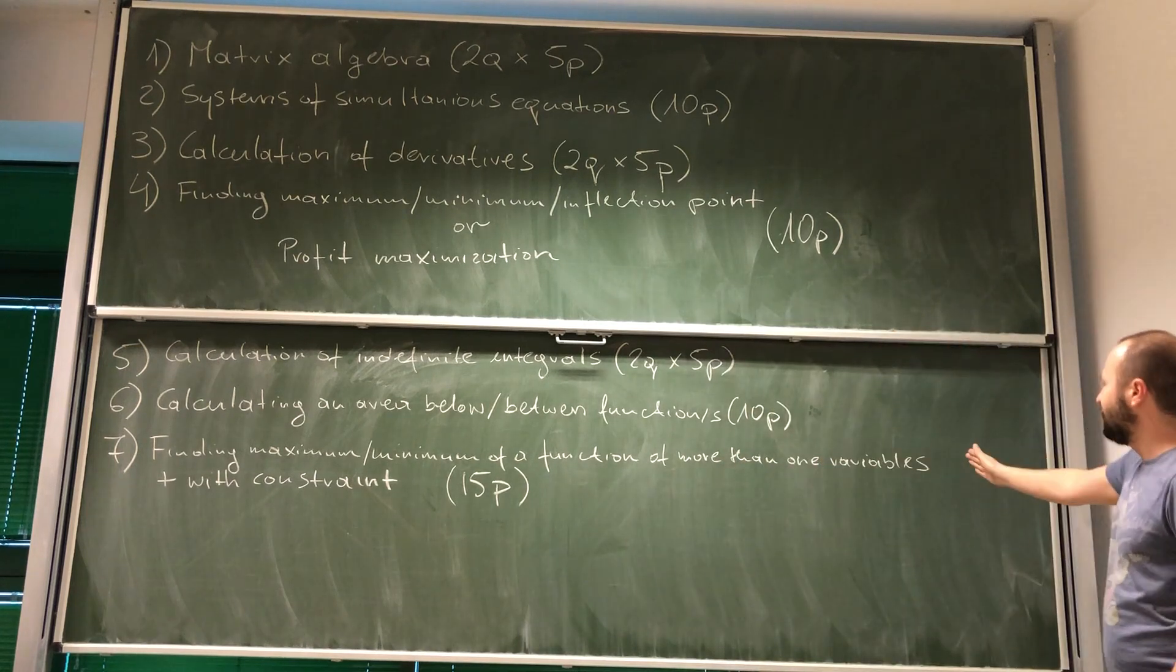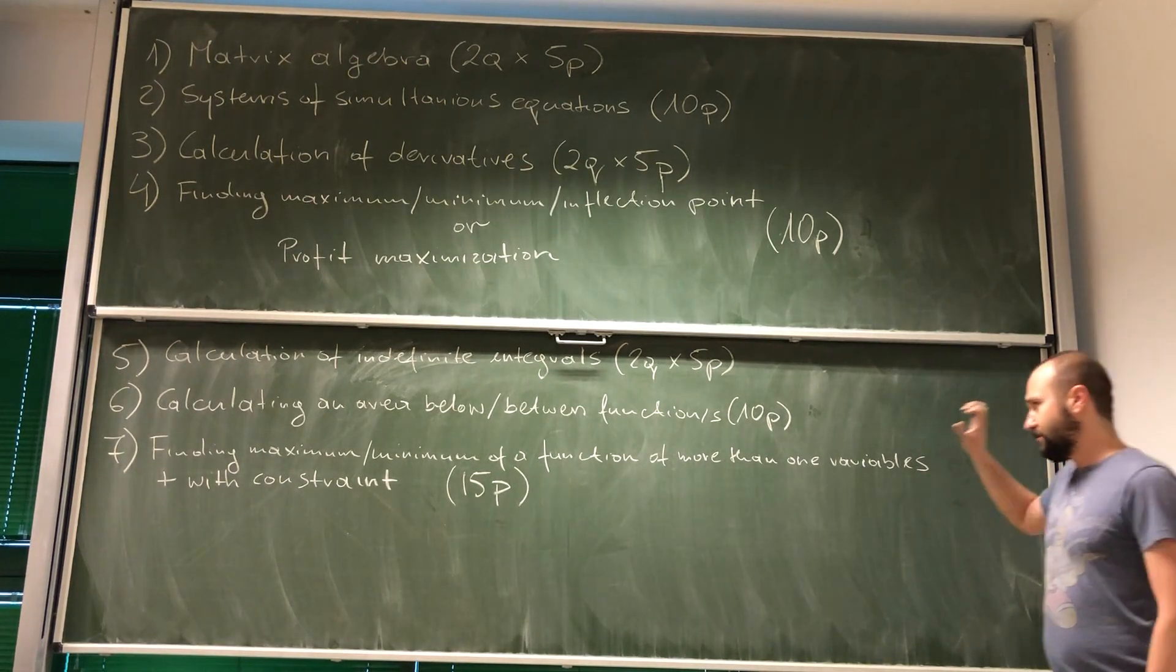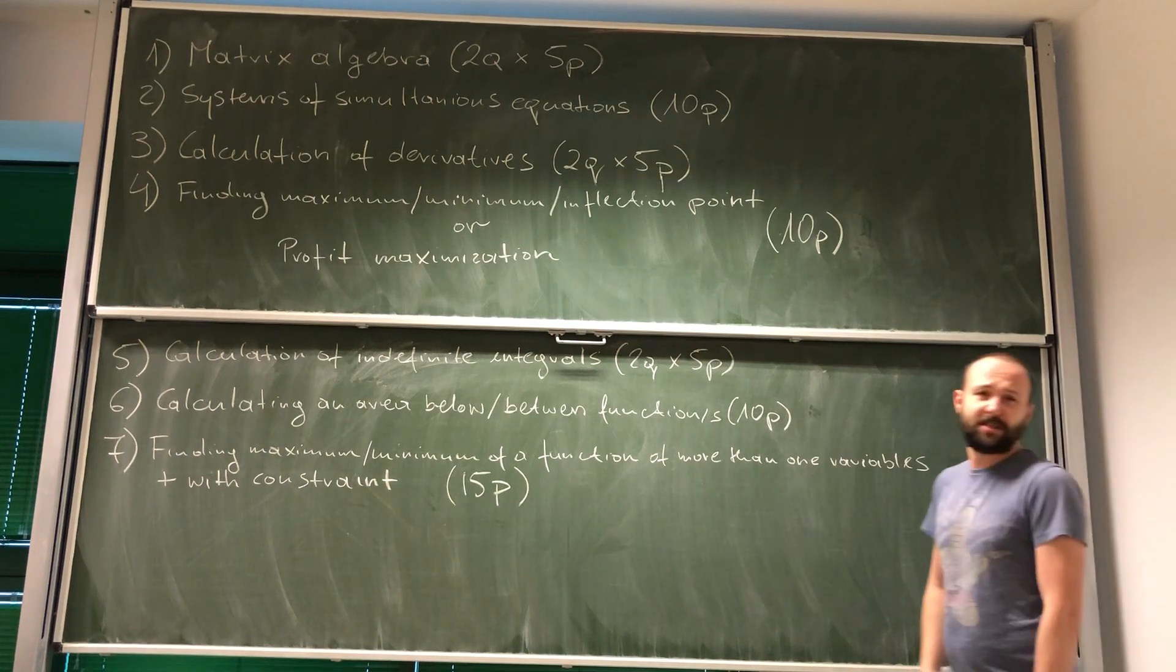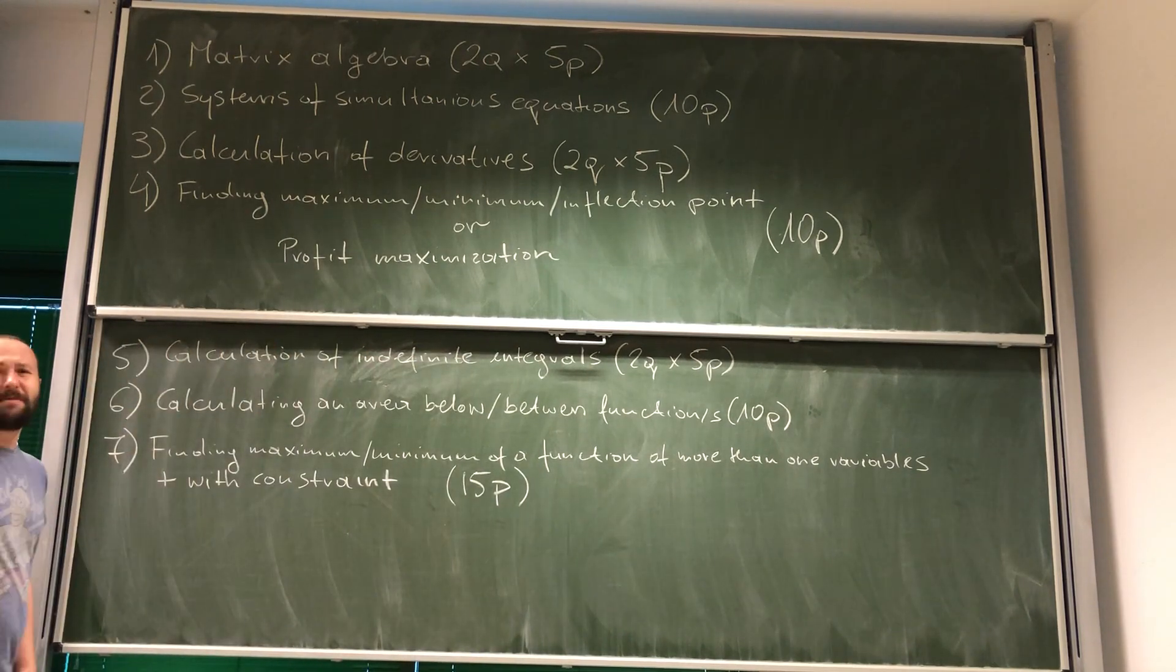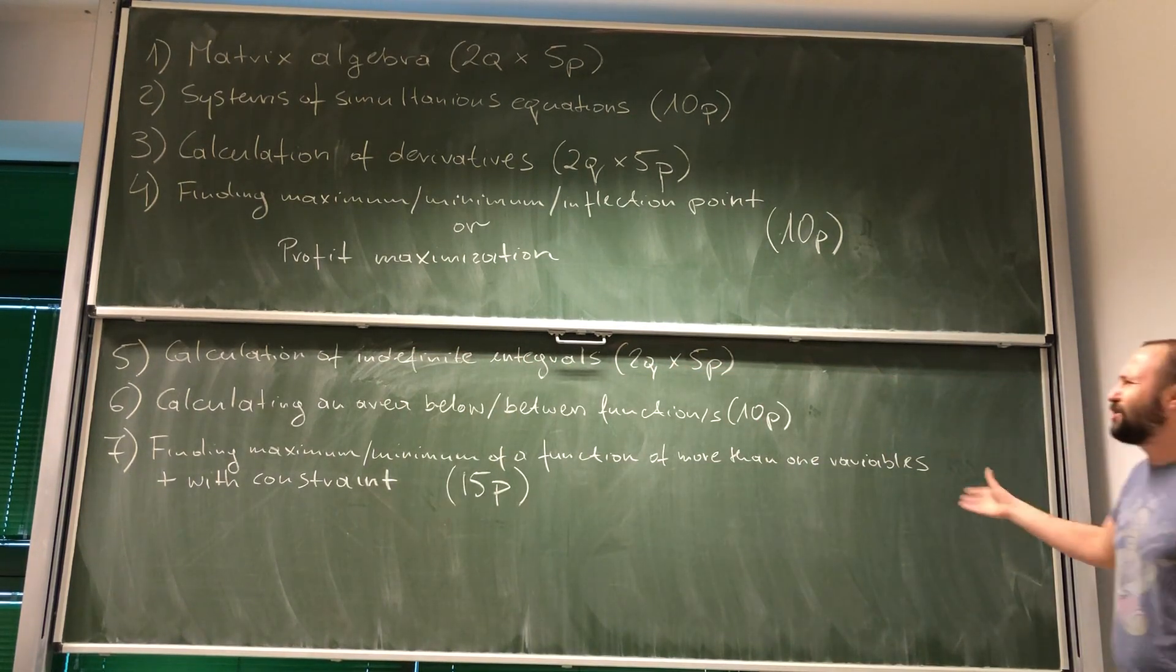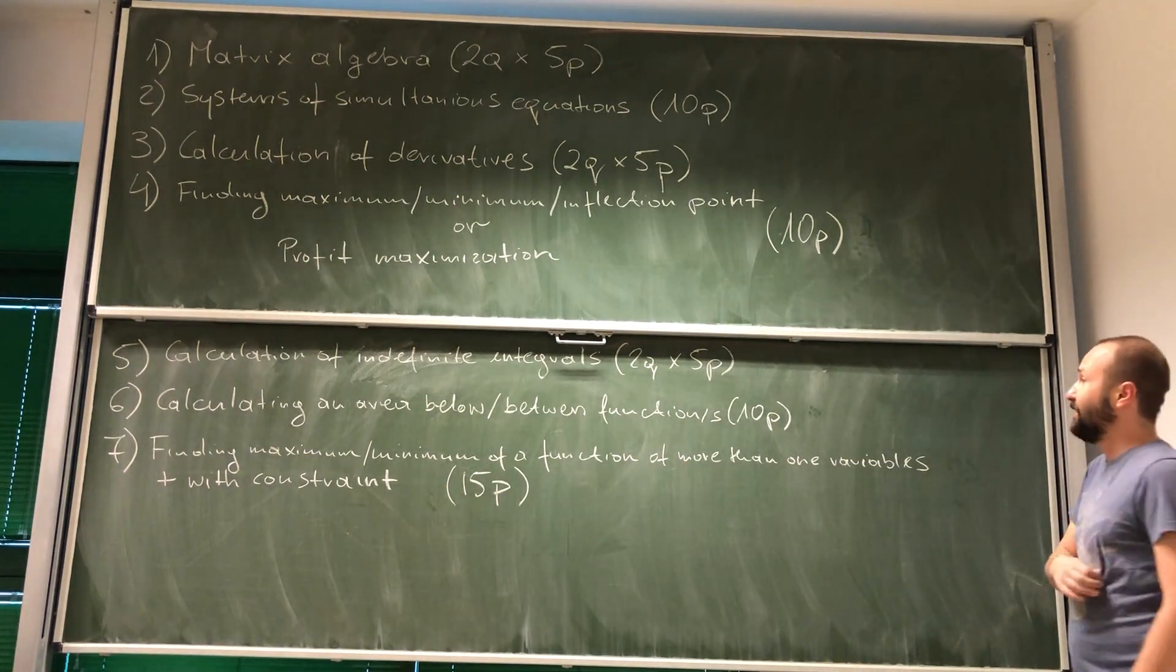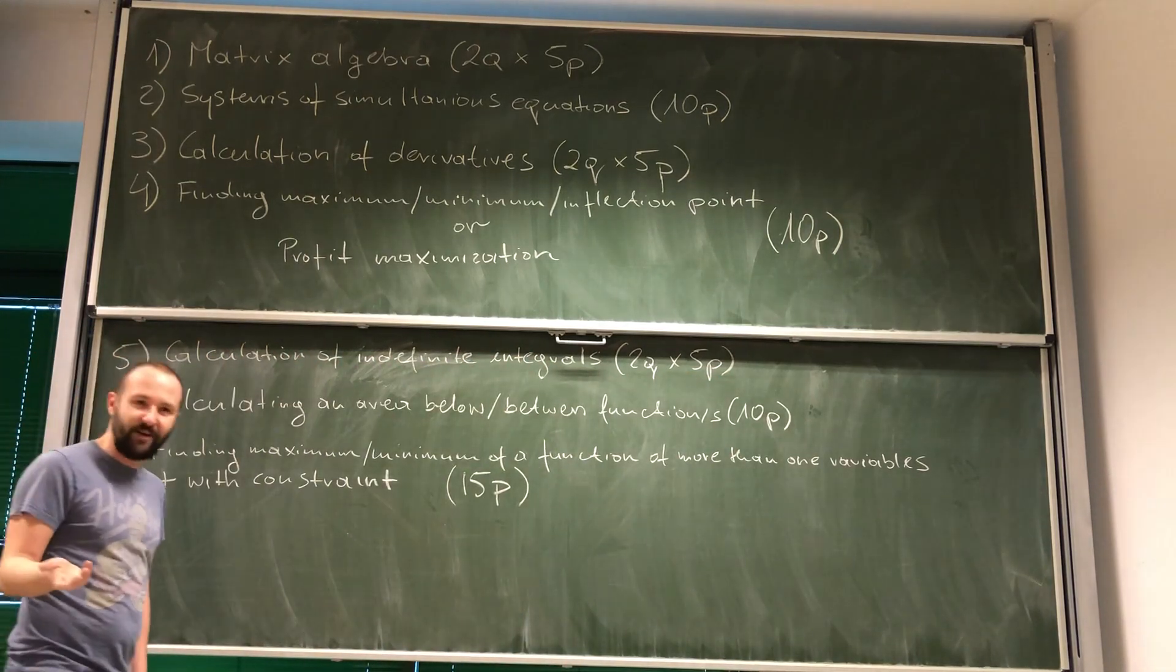The most time you'll have for a problem from section seven. But it's going to be depending on the type of question that you're going to have. Because sometimes you can find the maximum or minimum in a matter of two, three minutes, assuming that you know what you're doing. But especially in the cases with constraints or with three independent variables, then it might be a little bit more time consuming. So the time is actually going to be adjusted to the difficulty level of a question.